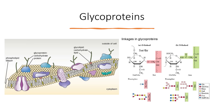Glycoproteins are proteins that have a carbohydrate attached to them. There are two different types of linkages: O-linkage, usually observed on serine and threonine residues, and N-linkage, which usually occurs on asparagine residues. Carbohydrate is a very large family of molecules, including mannose, galactose, glucose, and many more.